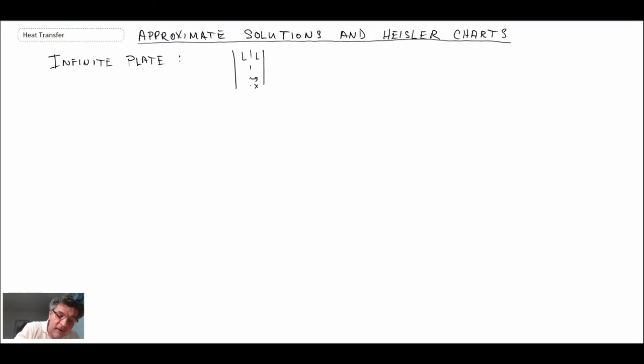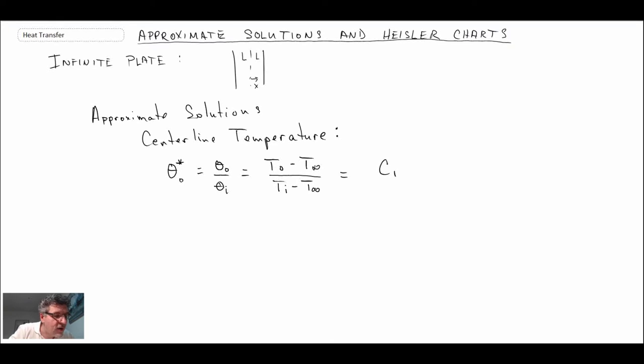We will begin with the approximate solutions, and we start with the centerline temperature. This is where we're going to use a lot of the nomenclature that we presented in the last segment. So theta naught star, that's going to be theta naught divided by theta i, and the approximate solution, we get this constant C1 exponential minus zeta squared, times the Fourier number, and the Fourier number, if you recall, was alpha t over L squared.